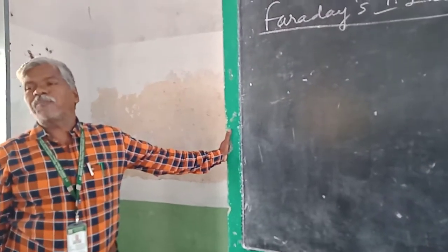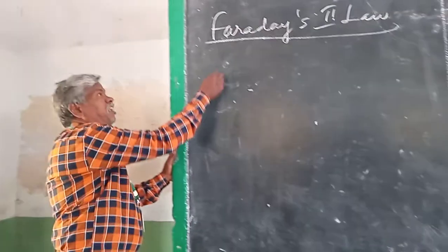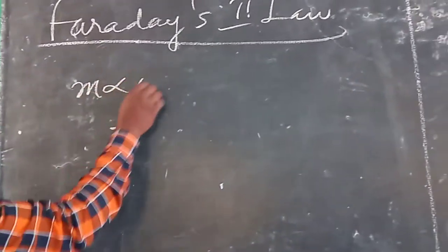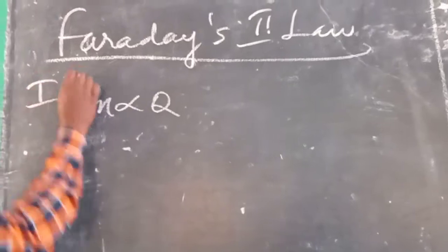We are going to study the first law of Electrolysis. What is the first law? M is proportional to Q. This is the first law.